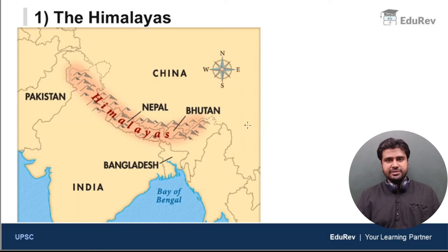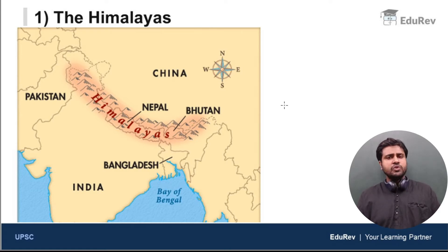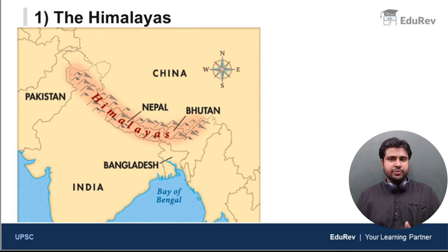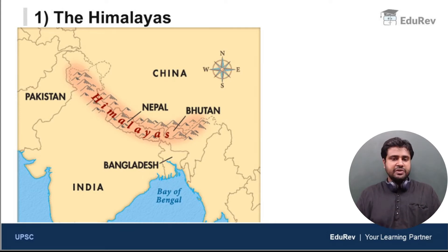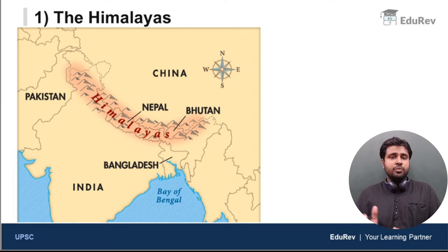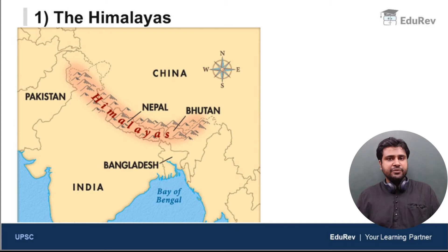Let us start with the Himalayas. We know that the Himalayas are the highest mountain chain in the world and also the youngest mountain chain in the world. I will discuss what that means in detail in the Himalayas video. The Himalayas consist of some of the tallest peaks in the world and are also called the king of the mountains, because this entire region is very complicated — it's a very complex topography. There are so many mountains more than 6000 meters that have not been counted, mapped, or named. That is the beauty and magnificence of the Himalayas.